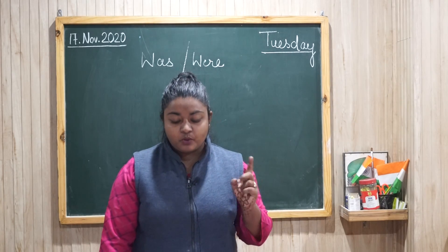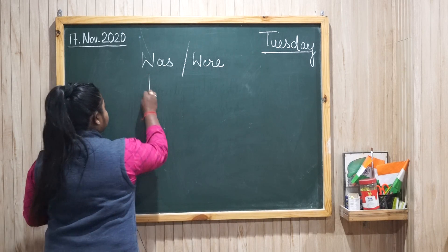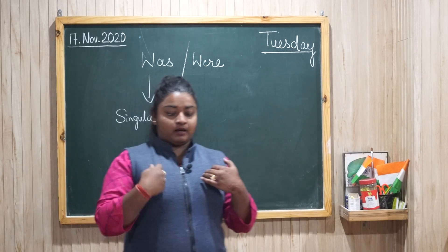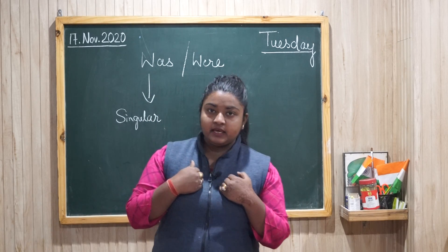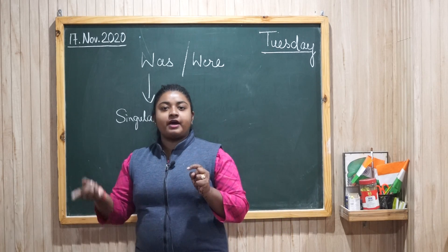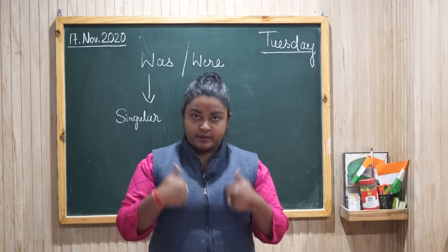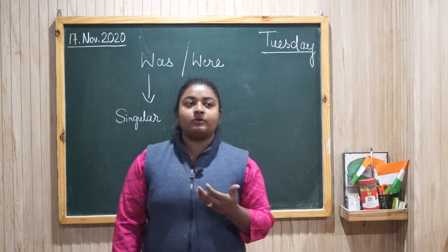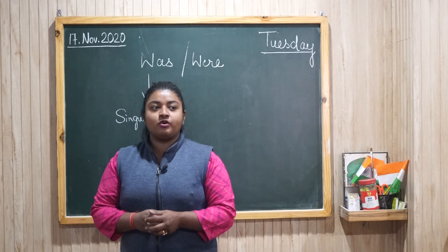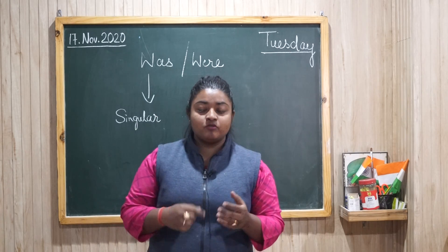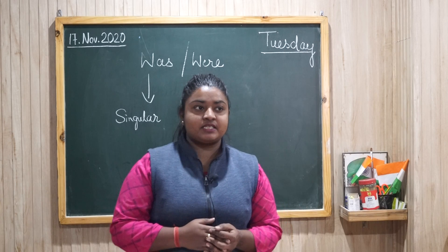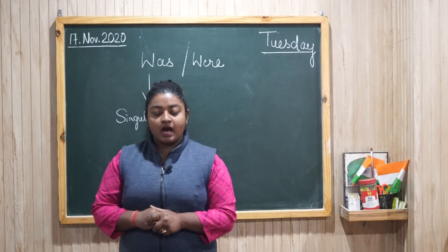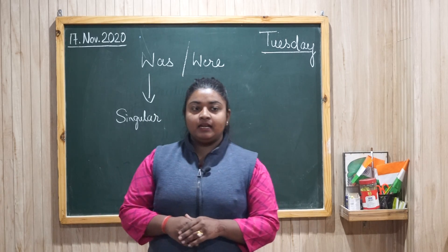अब आ रहे हैं — we use was with the following singular. Was किसके लिए use होता है? Singular के लिए — जैसे कि example: I was in Punjab yesterday — कल मैं पंजाब में थी। तो इसका मतलब क्या है? मैं यानि कि महिमा। आप अपना नाम लेके भी बोल सकते हो। जैसे कि — Mohan was at his granny's house last night — यानि कि मोहन अपनी ग्रानी के घर था last night।